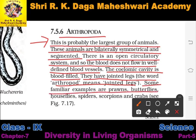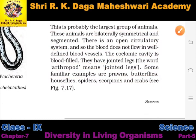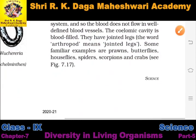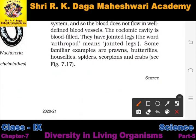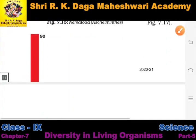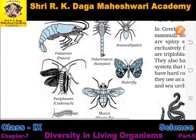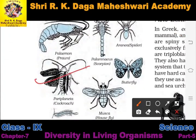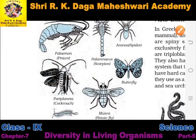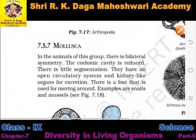Some familiar examples of Arthropoda are prawns, butterflies, house flies, spiders, scorpions, and crabs. You can see the picture of all these animals, and you are probably already familiar with them.